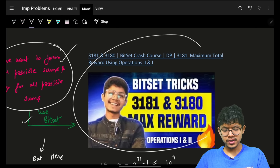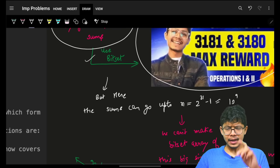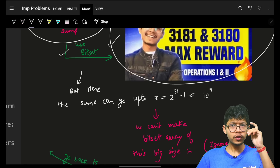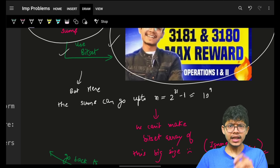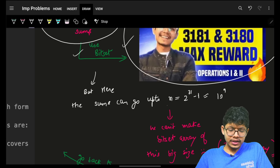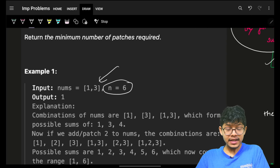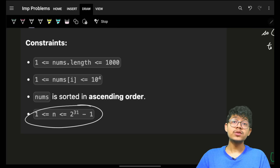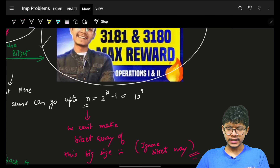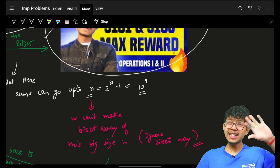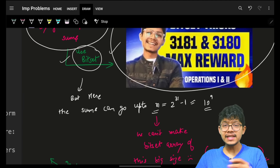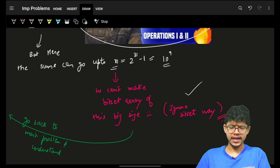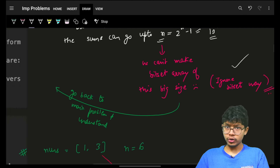If you don't know the bitset technique, you can go watch that video. Now, can we use it here? To make a bitset array, you need to know the number of possible sums, which depends on n. Here n itself is roughly 2×10^9, so we cannot make a bitset array that large. One thing is obvious — we cannot use the bitset approach here.